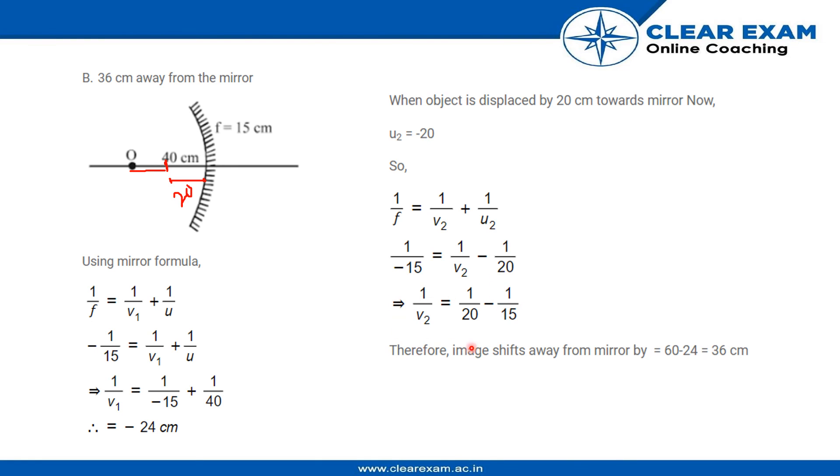Sorry, v2 will come out to be 60 centimeters. Now we need to find the difference between the shift of image values. We'll consider the value that comes out to be here as 60, and using equations 1 and 2, we'll find the value, the shift in image by 36 centimeters.